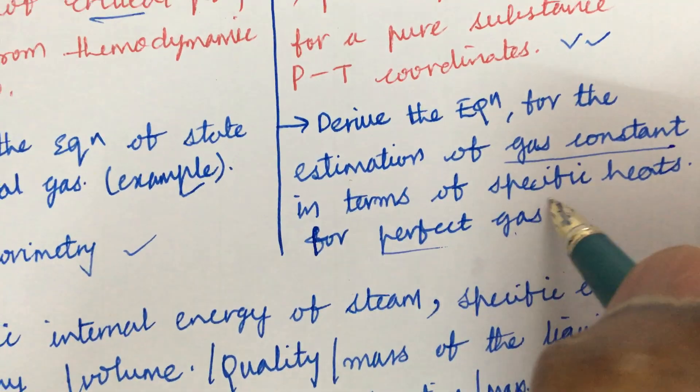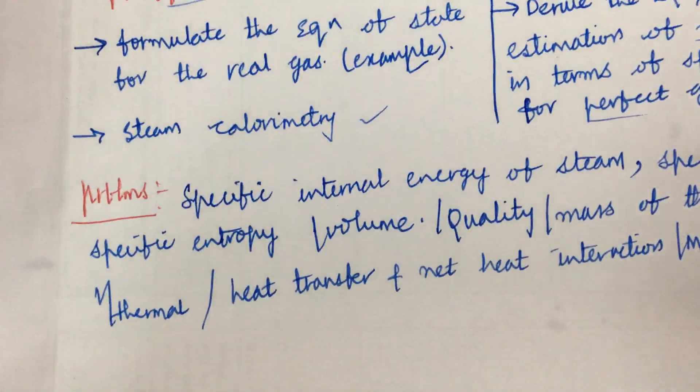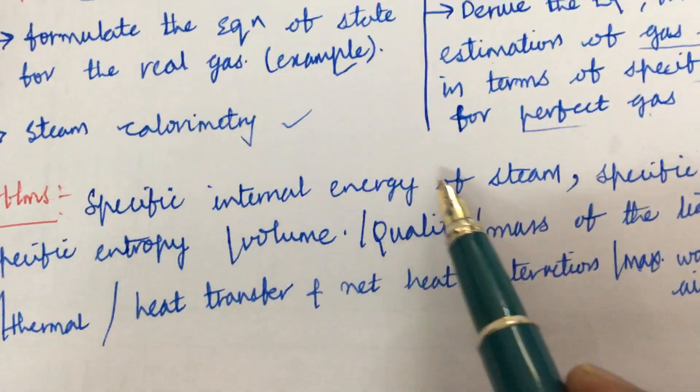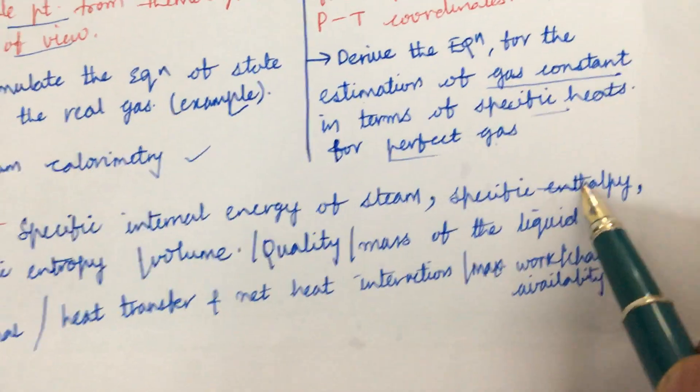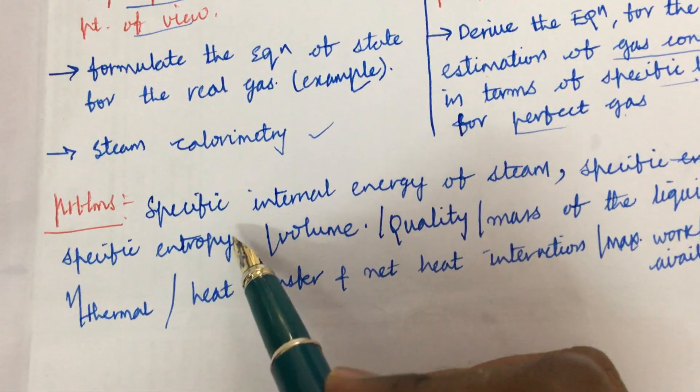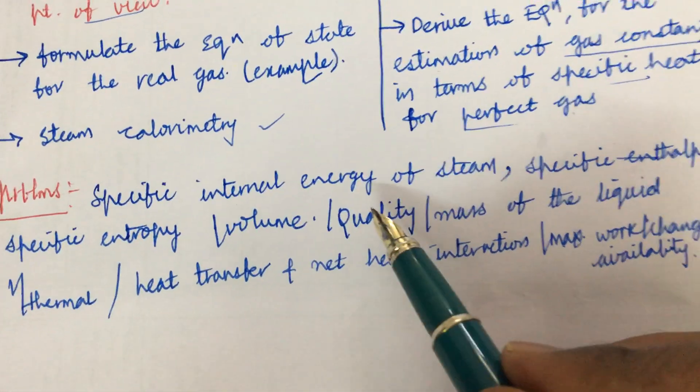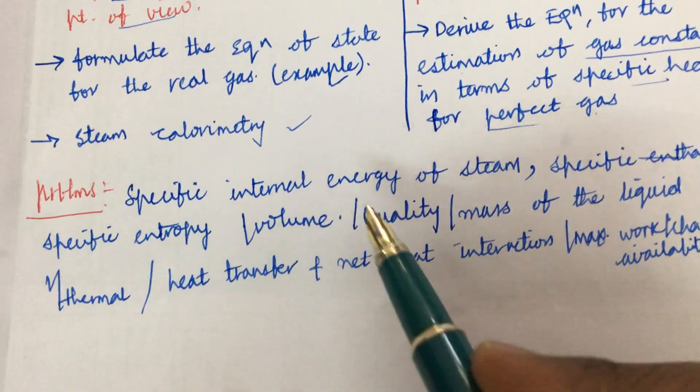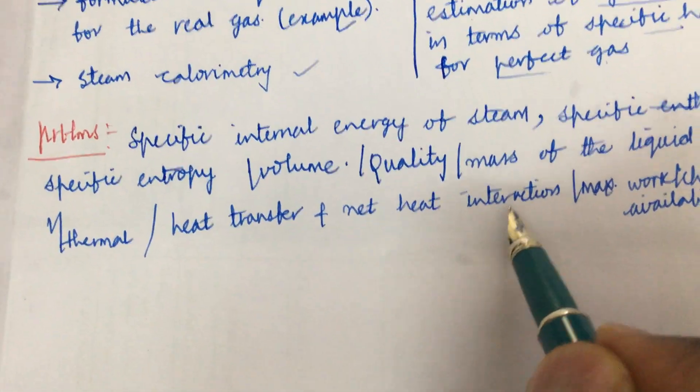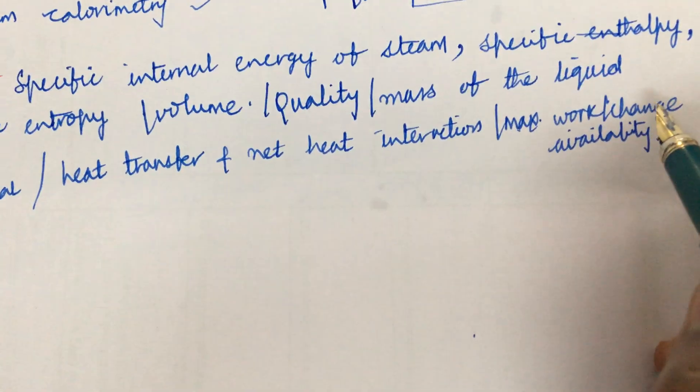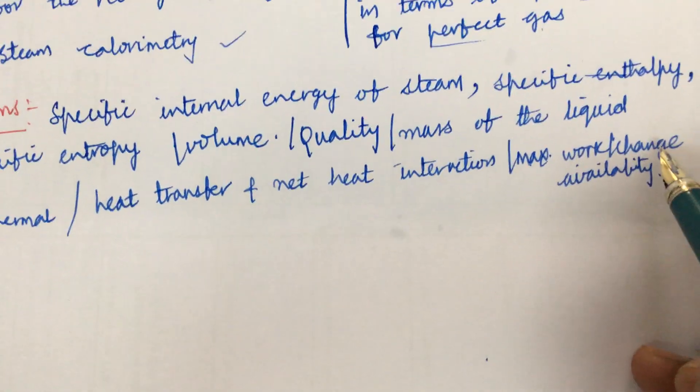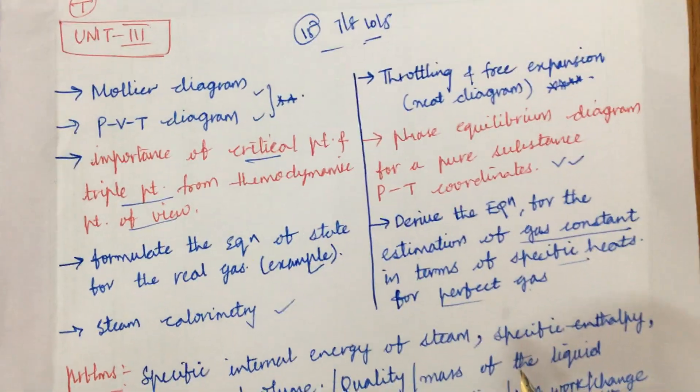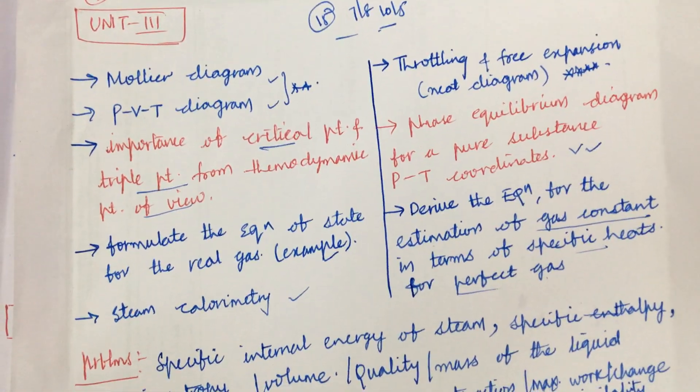And the problems related to the third unit, all about the specific: calculate the specific internal energy of the steam, specific enthalpy, specific entropy, or the volume, quality and mass of the liquid, and the thermal efficiency, heat transfer, and the net heat interaction, and maximum work done or change in availability. These all are the very important concepts and questions. Without skipping any part you are supposed to work out, dear students.